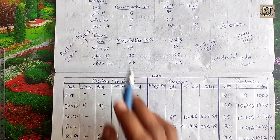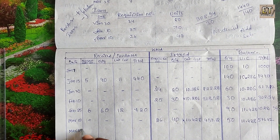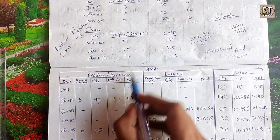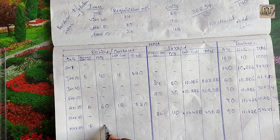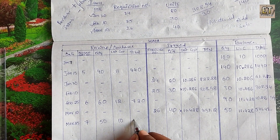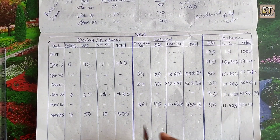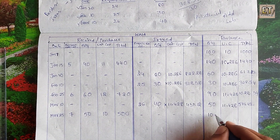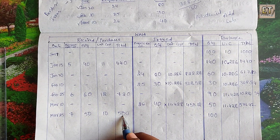March 25 — final entry. Requisition number 7. We add 50 units at rate 10. Purchase value: 50 × 10 = 500. Balance quantity: 50 + 50 = 100 units. Total balance value: 571 + 500 = 1,071.